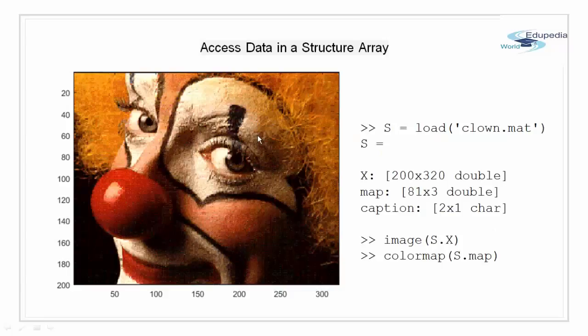Accessing data in a structure. Now using a built-in matrix file I am going to show how to access the contents of a structure array. I have loaded a clown.mat file which is nothing but a structure with three fields that is X, map and caption. Using the dot notation I am going to access the field X and map and show what has been loaded. So what has been loaded is an image of clown.